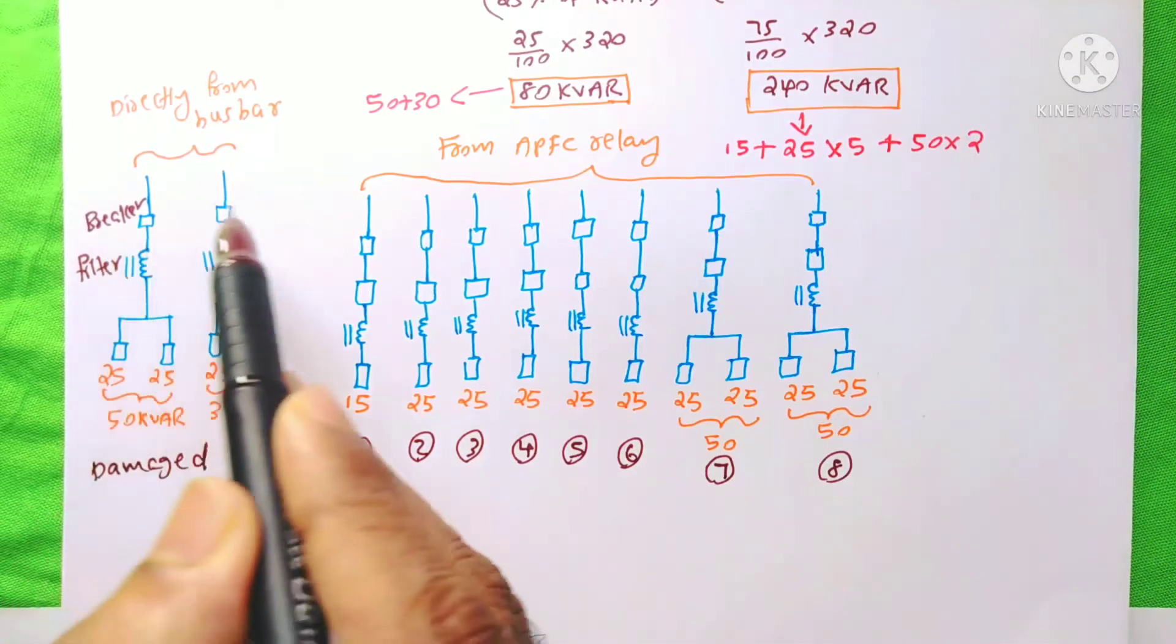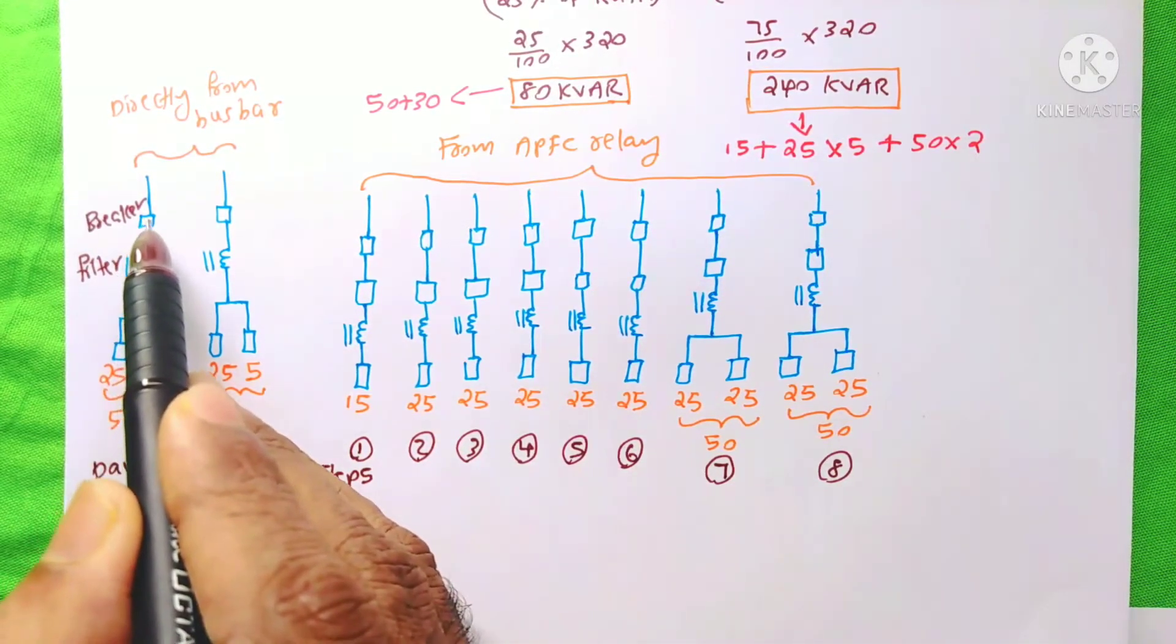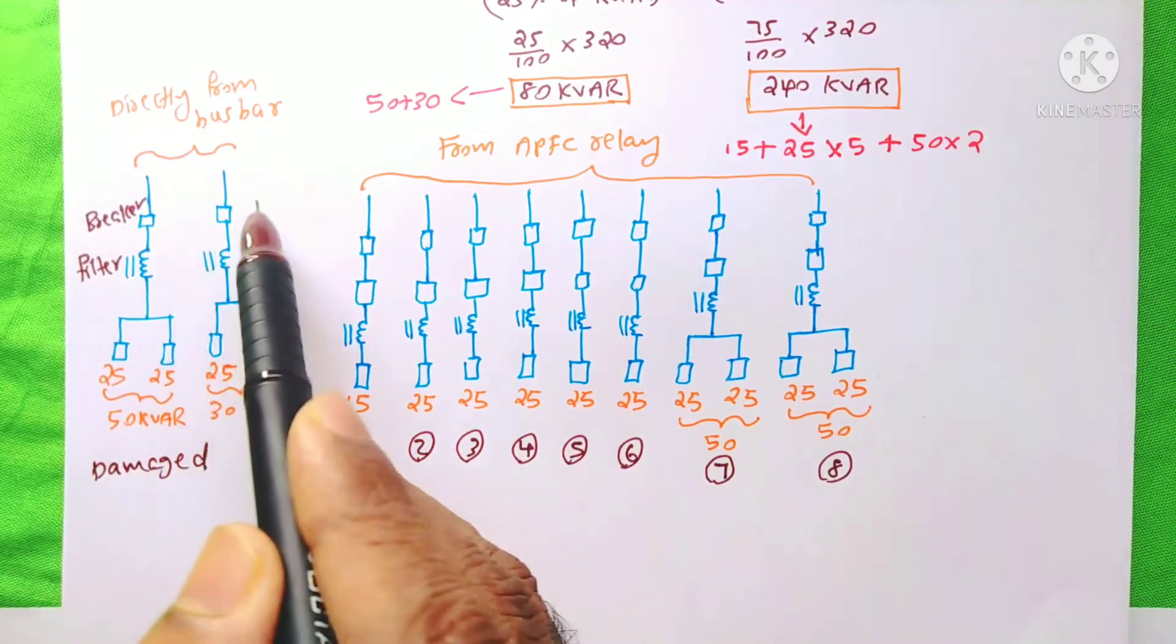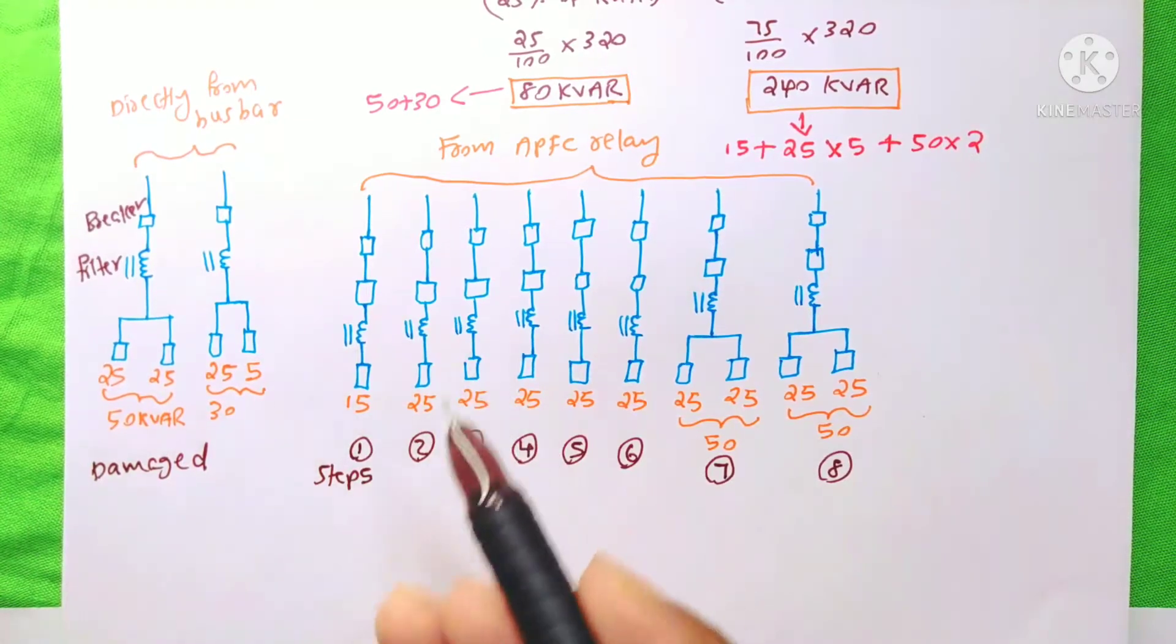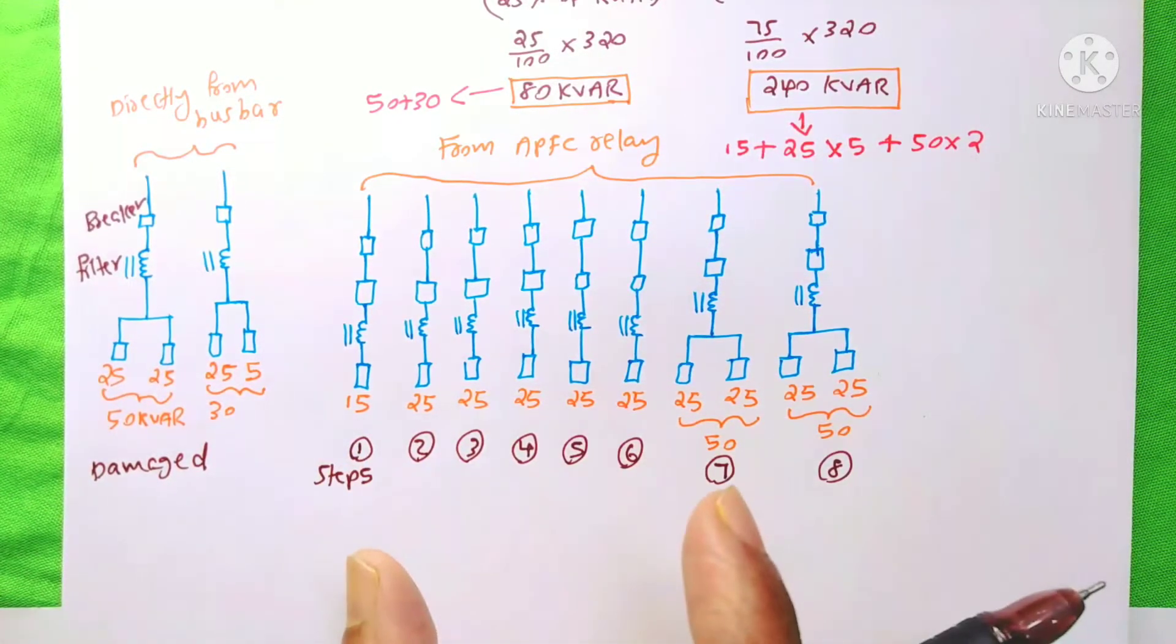if I divide it into 2 breakers, then even if one is damaged, the other one will be on the line and it can handle our load requirement for some extent.